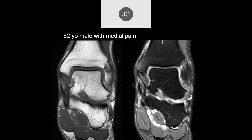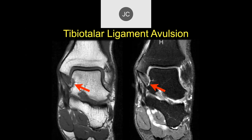Robert, what do you think of this 62-year-old male? It looks like there's a tear of the deep deltoid right there — diffuse increased signal intensity. We've lost that striated appearance to the deep deltoid. So that's a tibial-talar ligament avulsion, or deep deltoid ligament avulsion.